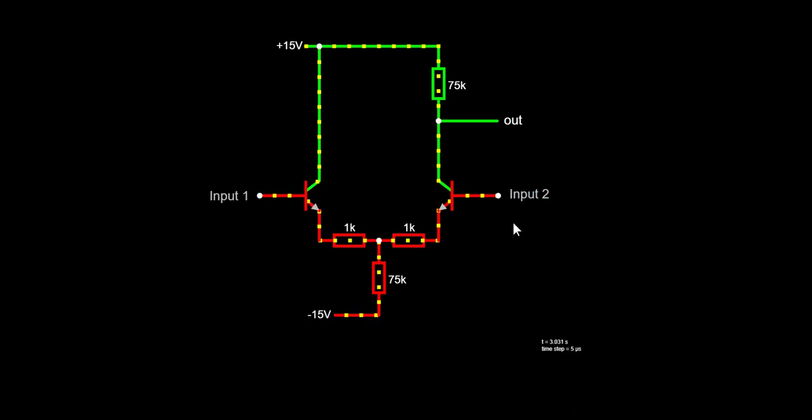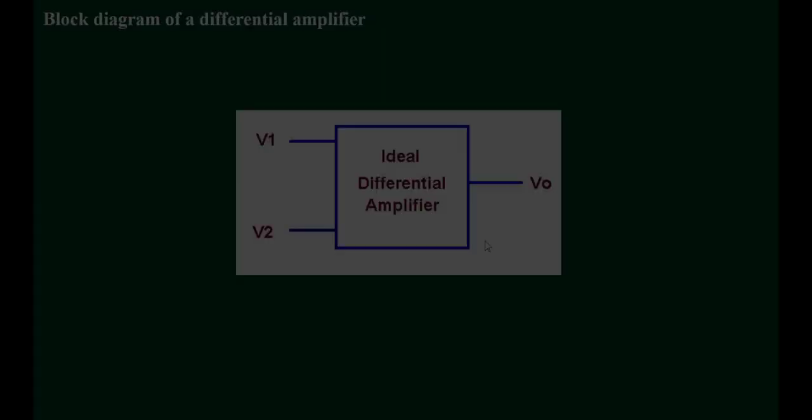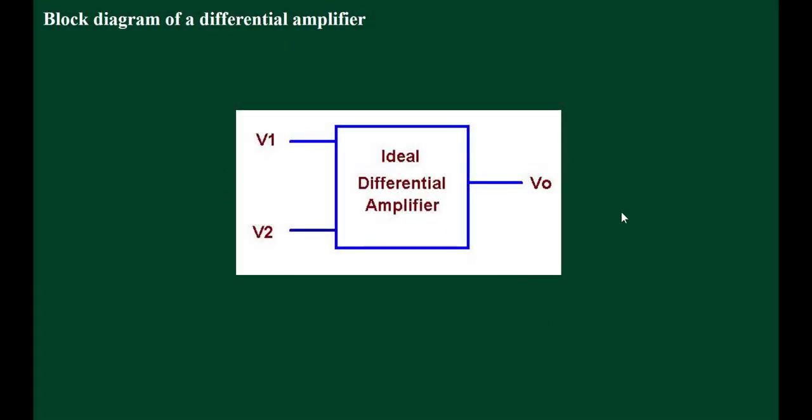Before we understand how this circuit works, let's pack this circuit into a block diagram. This is the block diagram of a differential amplifier. Here, V1 and V2 are the two input signals of the differential amplifier and V0 is the single-ended output of differential amplifier.